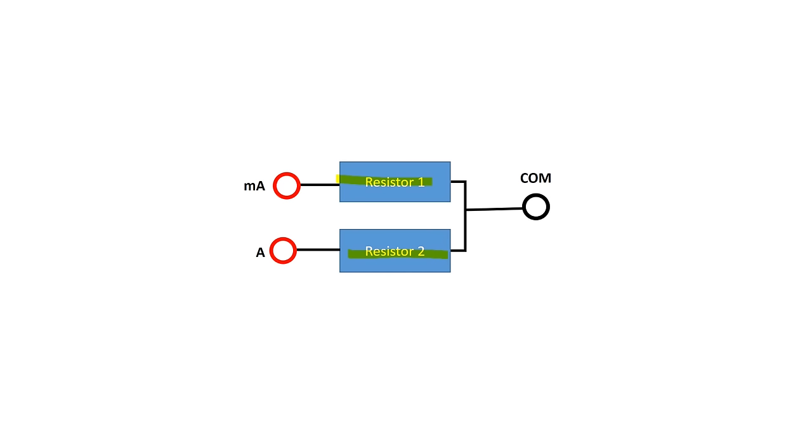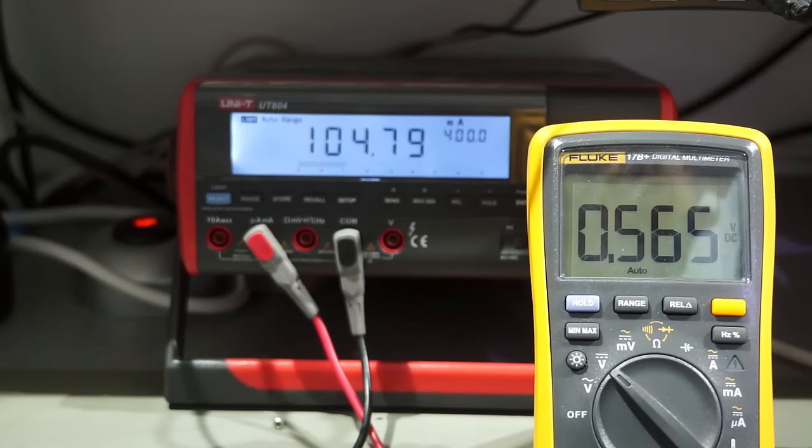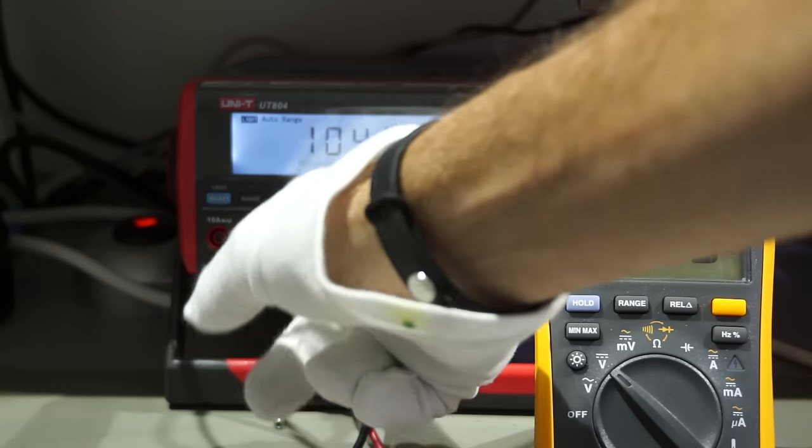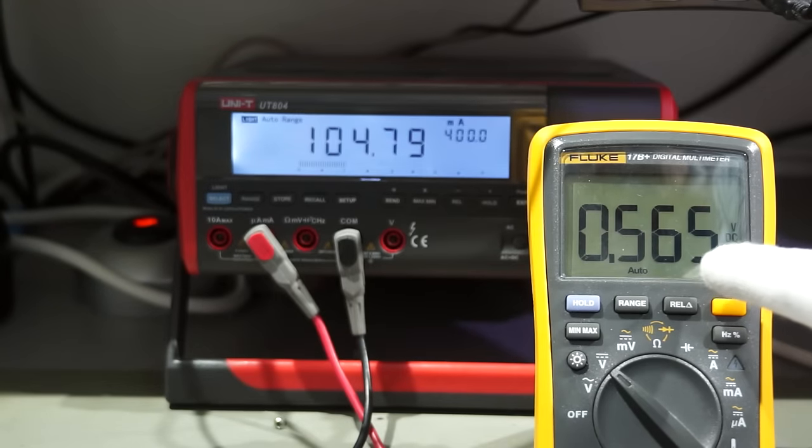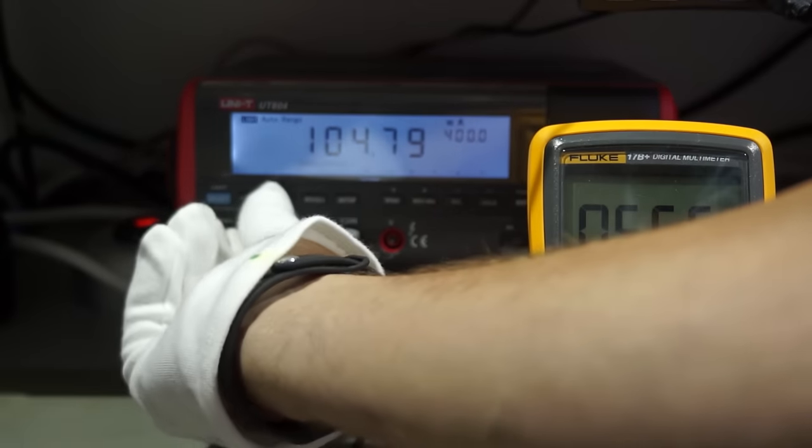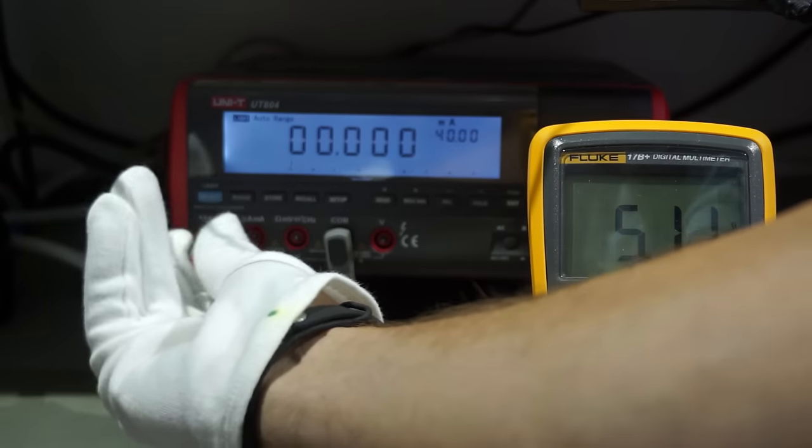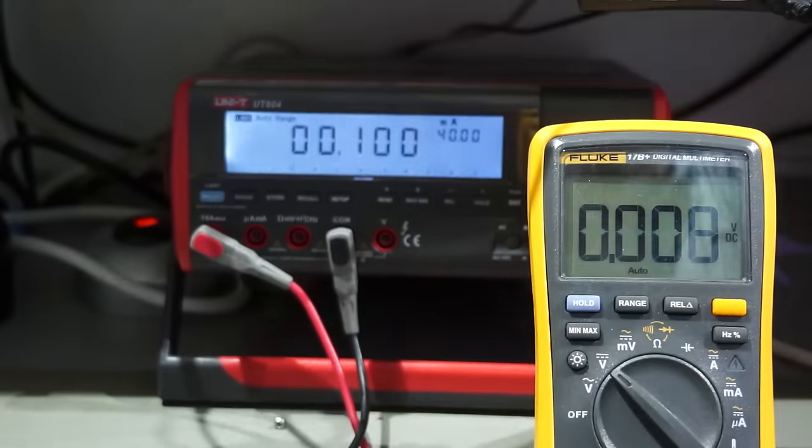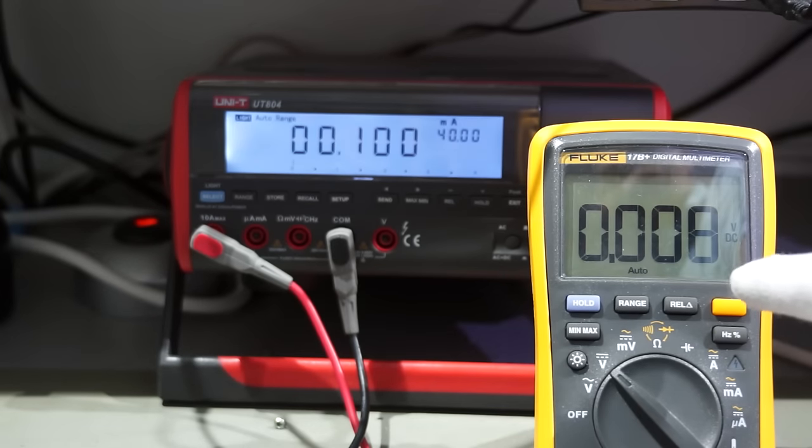The resistor between the milliampere connector and COM is bigger than the resistor between the ampere connector and COM. Let's check if we are right. But how can we measure the inner resistance of our multimeters? We apply a constant current and measure the voltage across the two leads. If we use our bench meter and use the milliampere input, we measure 0.56 volts and about 105 milliampere. So, the resistor is approximately 5 ohms. If we use the ampere input, we only measure 0.008 volt or 8 millivolt. This resistor is therefore only 0.1 ohms. Much smaller.